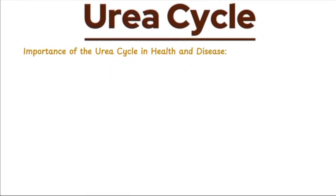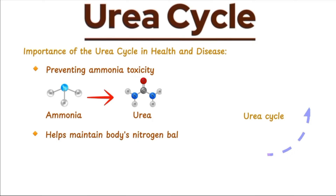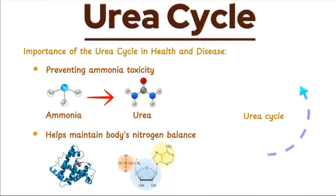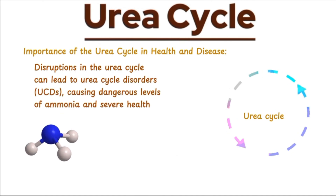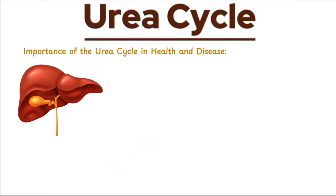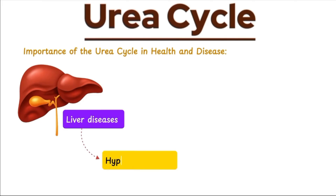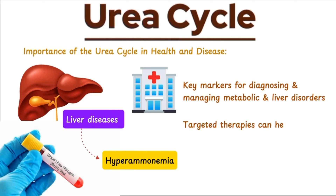The urea cycle is essential for preventing ammonia toxicity by converting toxic ammonia into urea, a safer compound that can be excreted. This cycle helps maintain the body's nitrogen balance, crucial for protein and nucleotide synthesis. Disruptions in the urea cycle can lead to urea cycle disorders, causing dangerous levels of ammonia and severe health issues. The efficiency of the urea cycle is closely tied to liver function, with liver diseases potentially leading to hyperammonemia. Clinically, blood urea and ammonia levels are key markers for diagnosing and managing metabolic and liver disorders, and targeted therapies can help mitigate the effects of urea cycle disruptions.